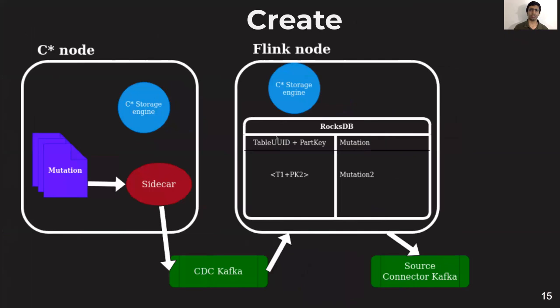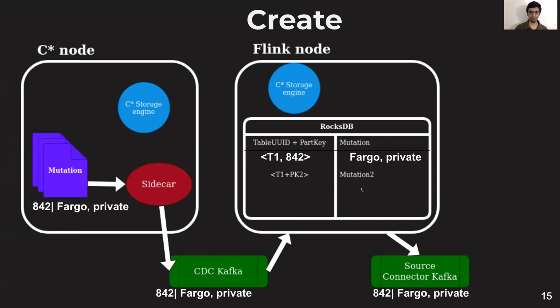Let's look at this with an example. Let's say there is a new movie being written into the database with movie ID 842 for Fargo, and the status is private. The sidecar would read this mutation and write it to the CDC Kafka topic. This would then be read by the Flink application and written into the RocksDB store with the partition key and the mutation information. As this is a fresh row, it would have all of the information for that particular row, and the second Kafka topic then gets a record for that row with the create operation. We maintain a fourth copy of the data outside of Cassandra.